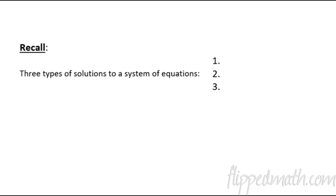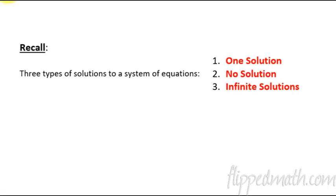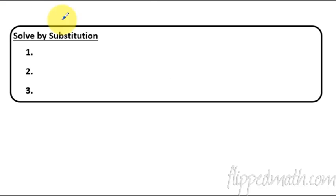From our last lesson, remember the three types of solutions to a system of equations: one solution (one point of intersection), no solution (parallel lines — no intersection), or infinite solutions (the two lines are exactly the same). We'll see these same answer types in this lesson, but solved algebraically using substitution.